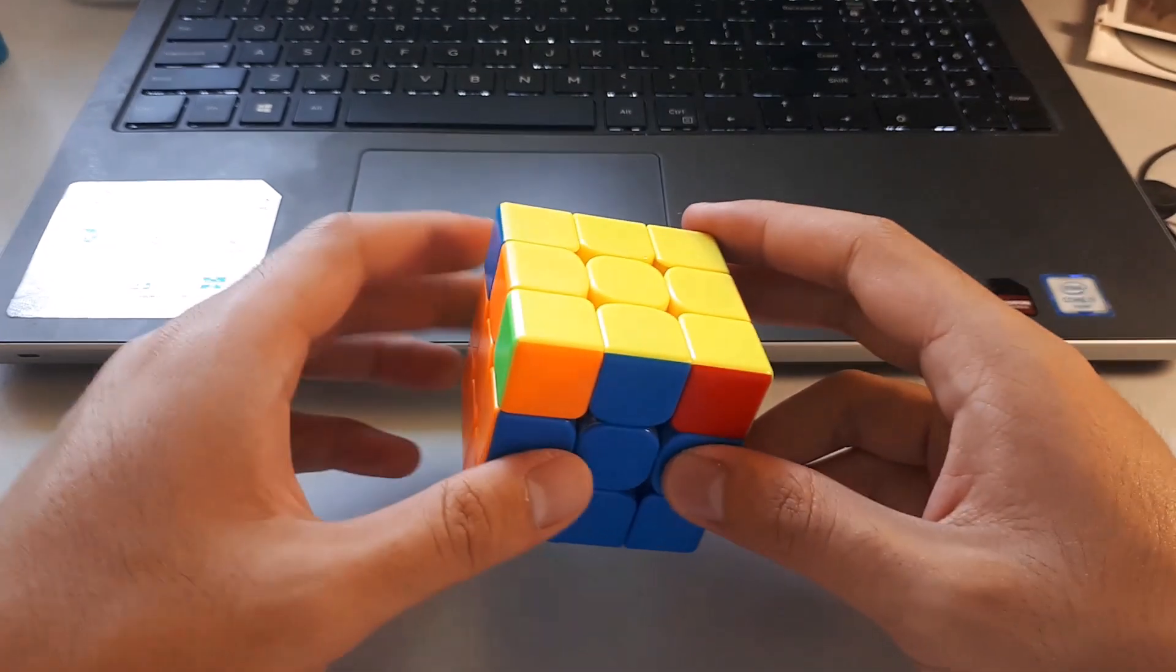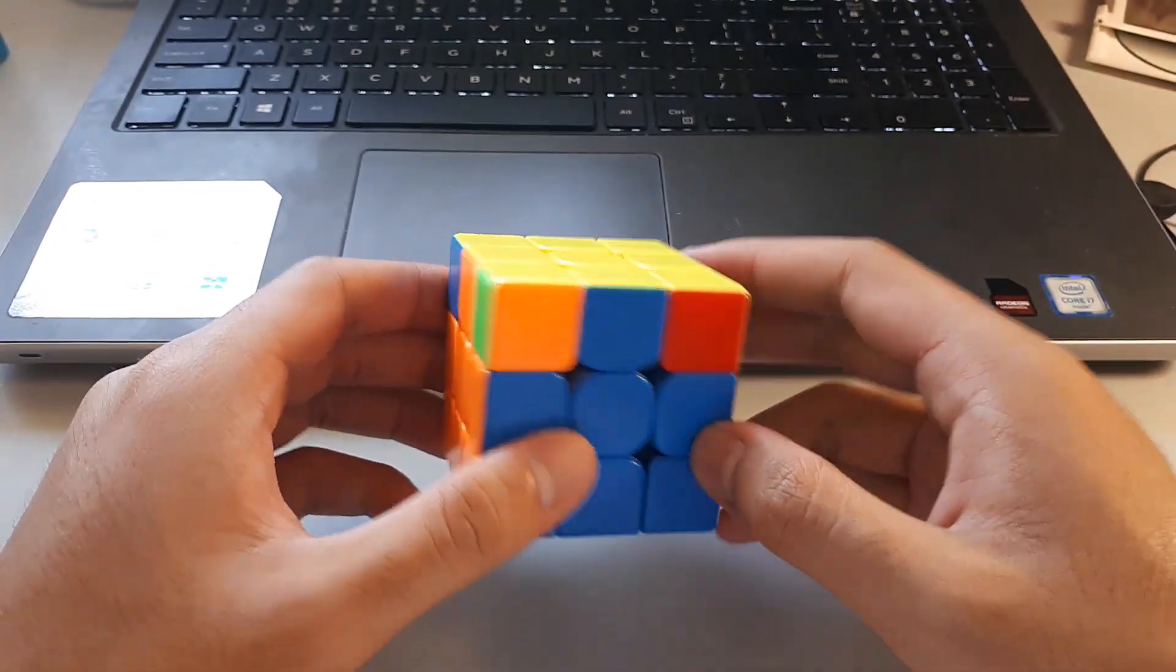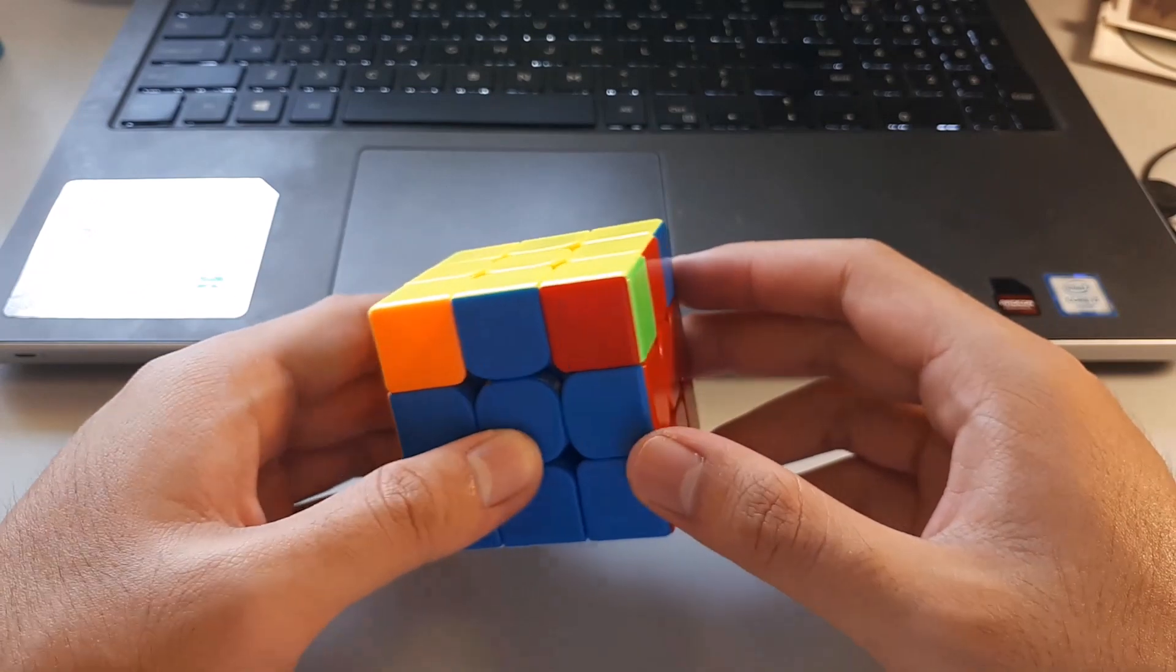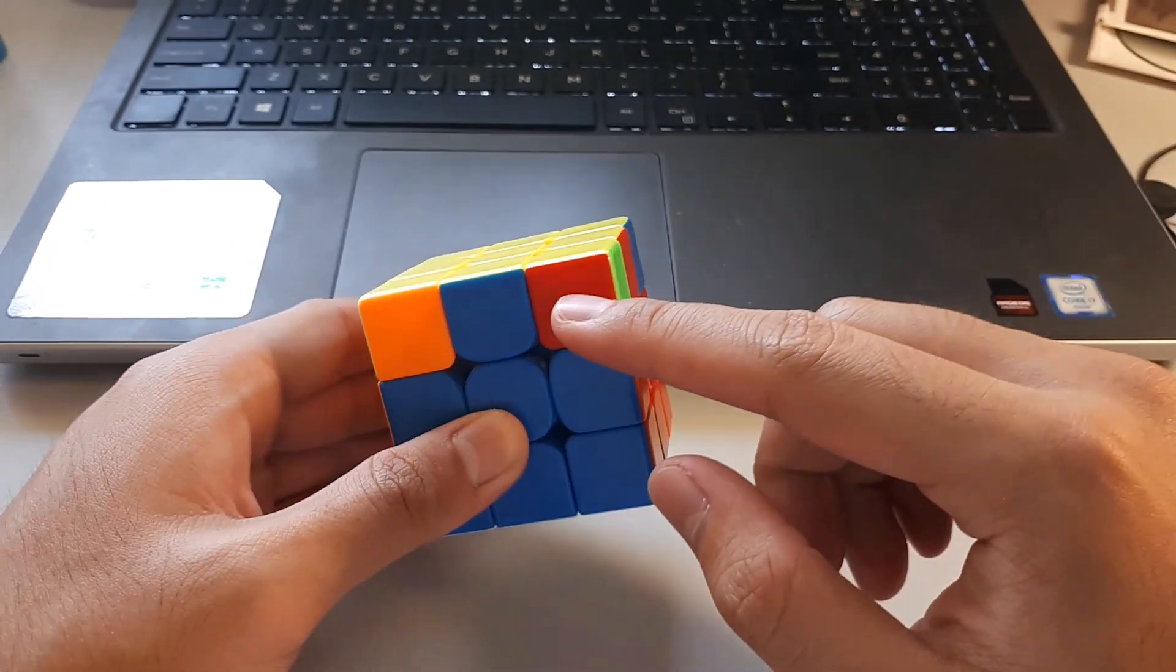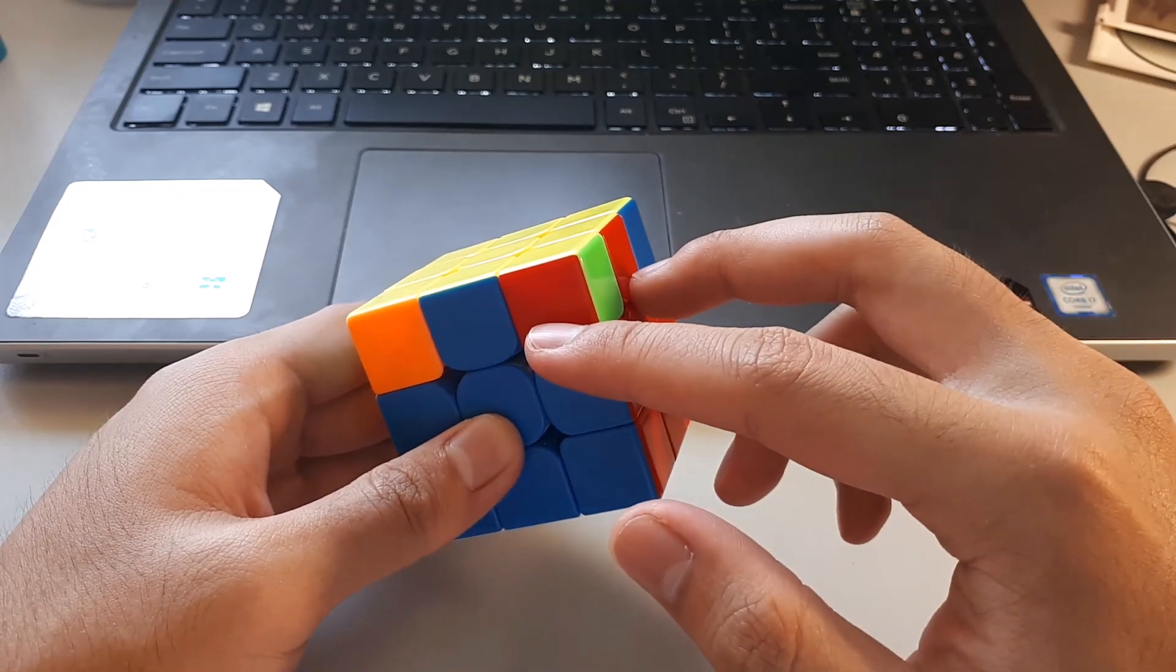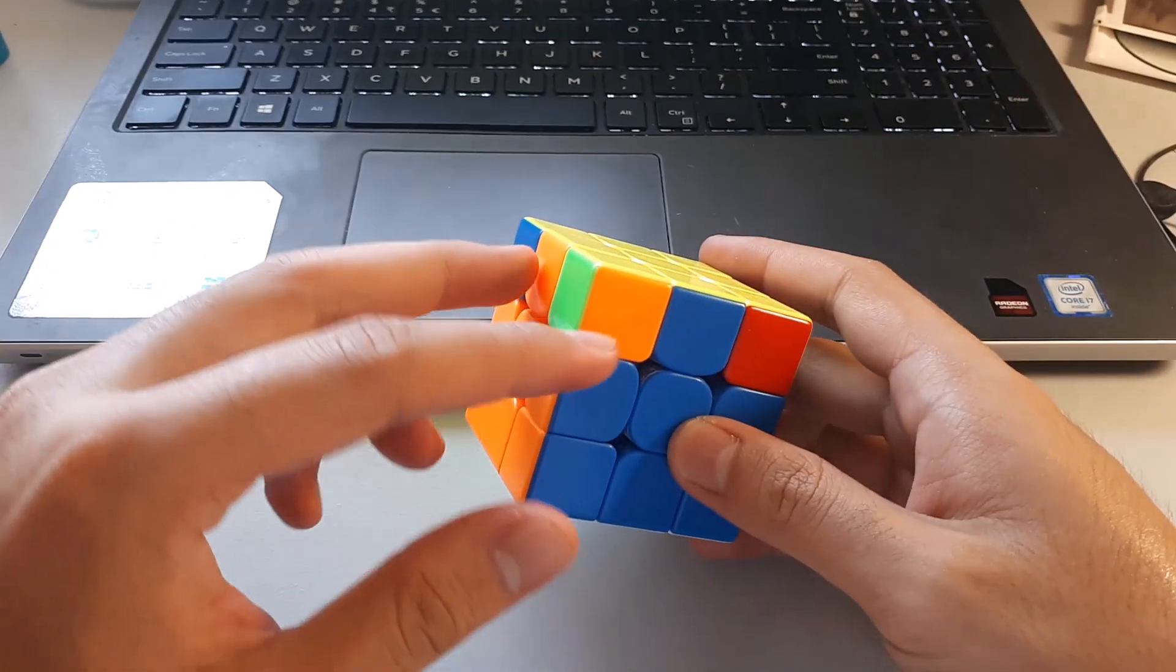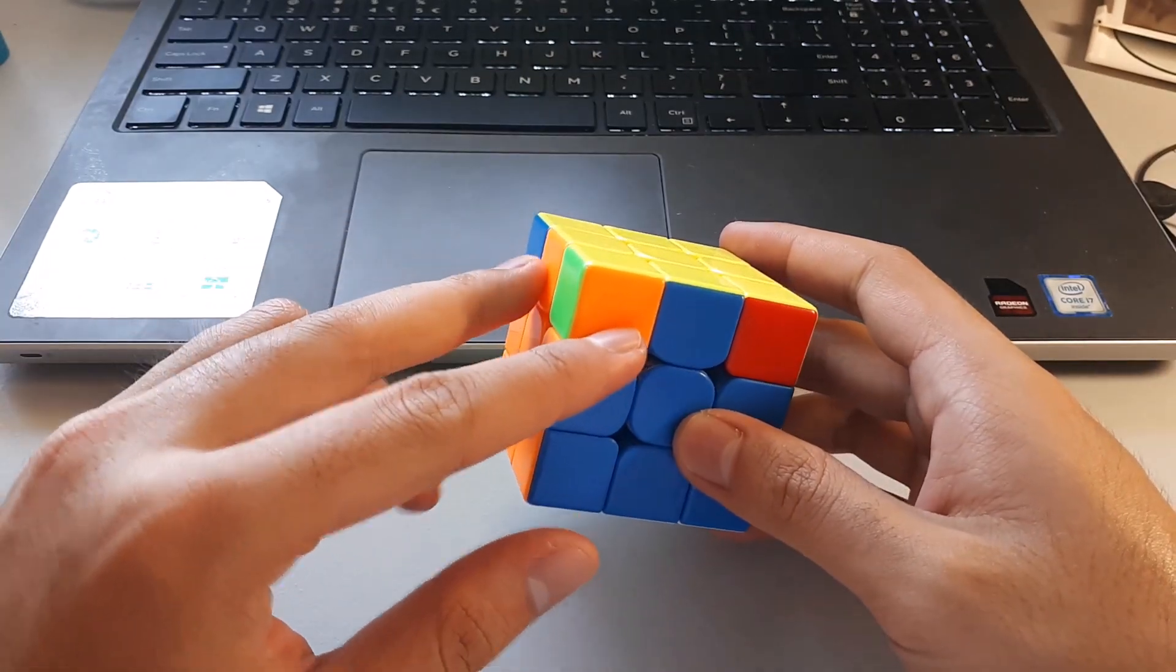So before we get into the E-perm algorithm, there is a particular way to hold the E-perm for the algorithm to work. The way to recognize it is to look at this front corner sticker here and the edge sticker here. These two have to be matching. If they're matching, that means it's the correct angle. And you can recognize it from the other side as well, looking at these two stickers.